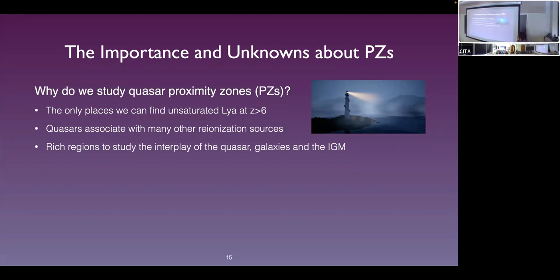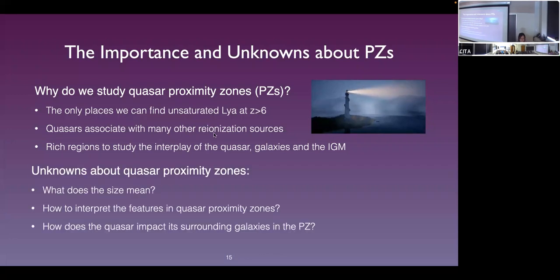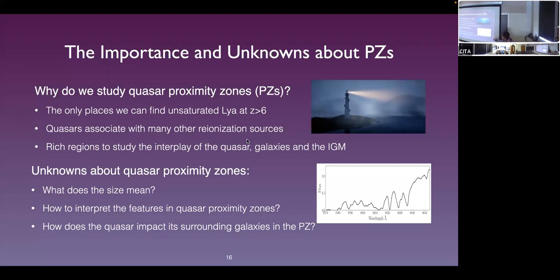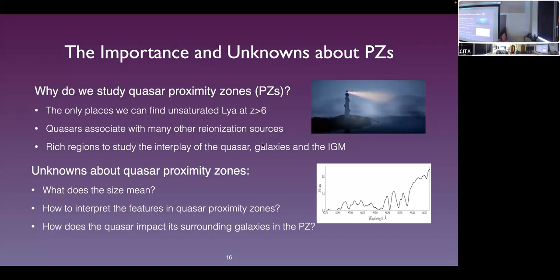Quasar proximity zones are regions where so much interesting physics is going on — they're very interesting regions to study the interplay between quasars, galaxies, and the IGM. In this talk I'd like to explore three topics: first, the size of the proximity zone and how to interpret it; second, the subtle features within the proximity zone that we can exploit; and third, the galaxies in the quasar environment.